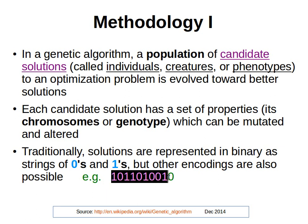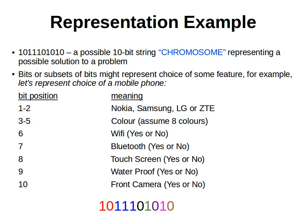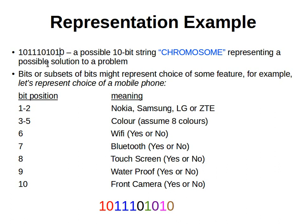For example, we have this binary string, and it can be a solution to some problem. Let's say we have this 10-bit string chromosome — a binary string of 10 bits — that represents a possible solution to a problem. Let's say bits or subsets of bits represent the choice of some feature. We spoke about traits in the last video, so each one or maybe each subset can represent some feature. For example, let's represent the choice of a mobile phone. This 10-bit string represents a mobile phone. The first two bits represent the make — is it Nokia, Samsung, LG, or ZTE? So it can be 00, 01, 10, or 11.